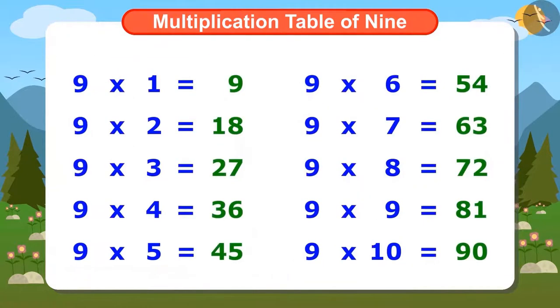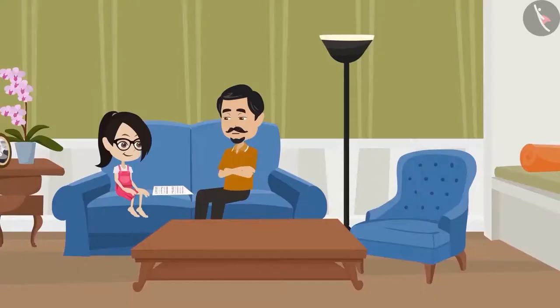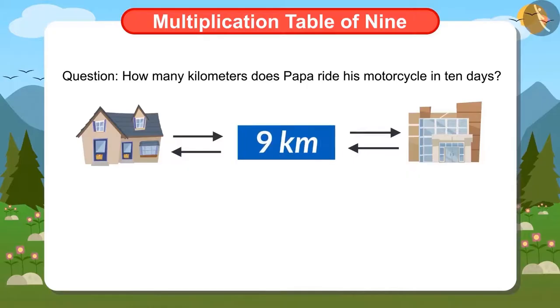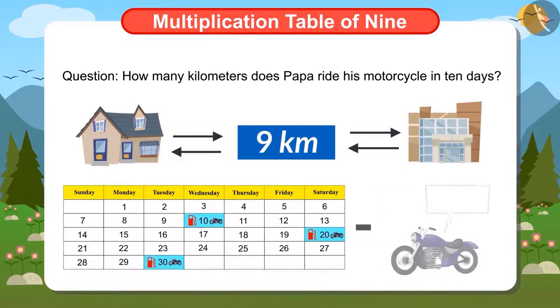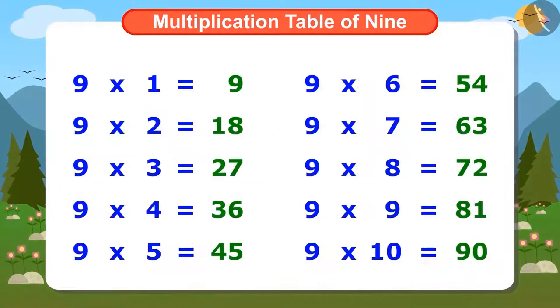Vandana has written the entire table of 9. Now she can tell papa how many kilometers her father drives the motorcycle in 10 days if he rides it for 9 kilometers per day. Can you answer this question by looking at the table of 9? You are absolutely right. For this, we have to find the answer of 10 times 9. And looking at this table, we can tell that the answer of 10 times 9 is 90.